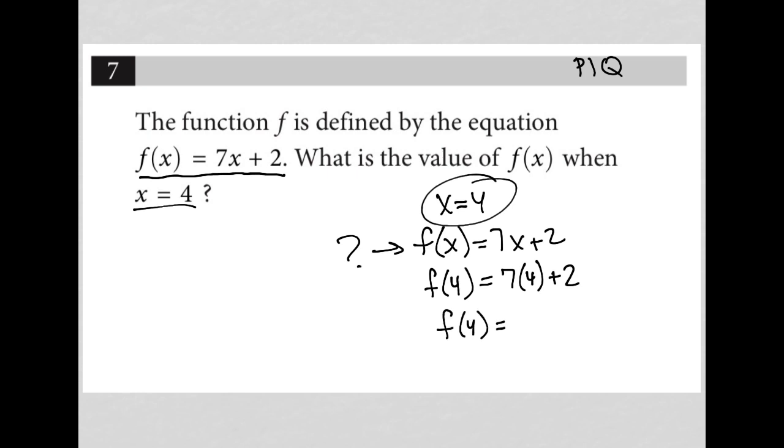So f of 4 is equal to 28 plus 2. 28 because 7 times 4 is 28. And therefore, f of 4 is equal to 28 plus 2, which is 30. And that is my correct answer.